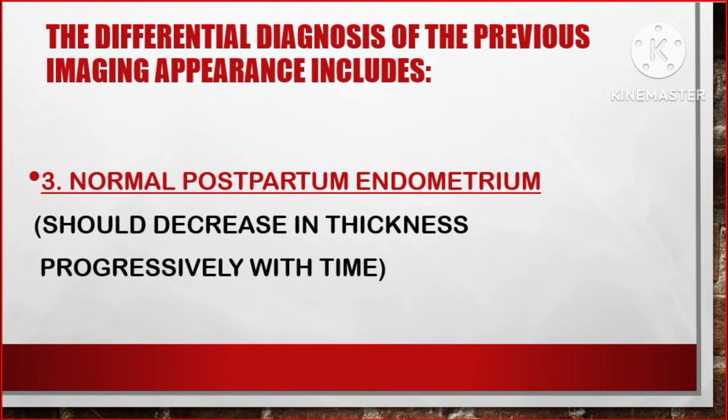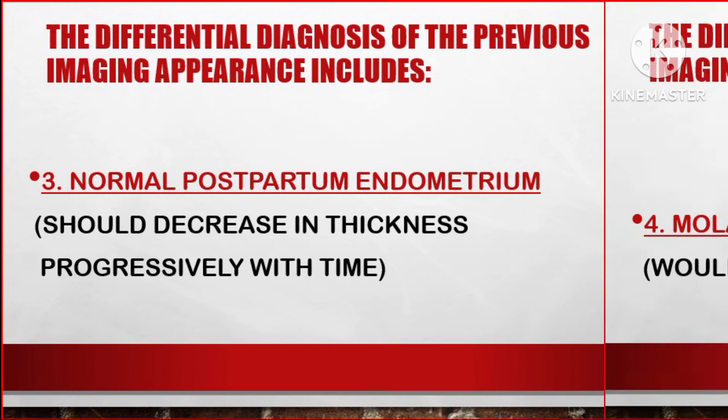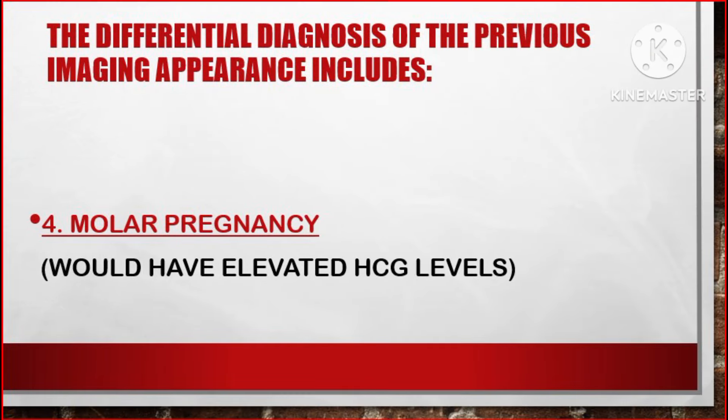Number three, normal postpartum endometrium — but it should decrease in thickness progressively with time. Number four, molar pregnancy — but it would have elevated human chorionic gonadotrophin levels.